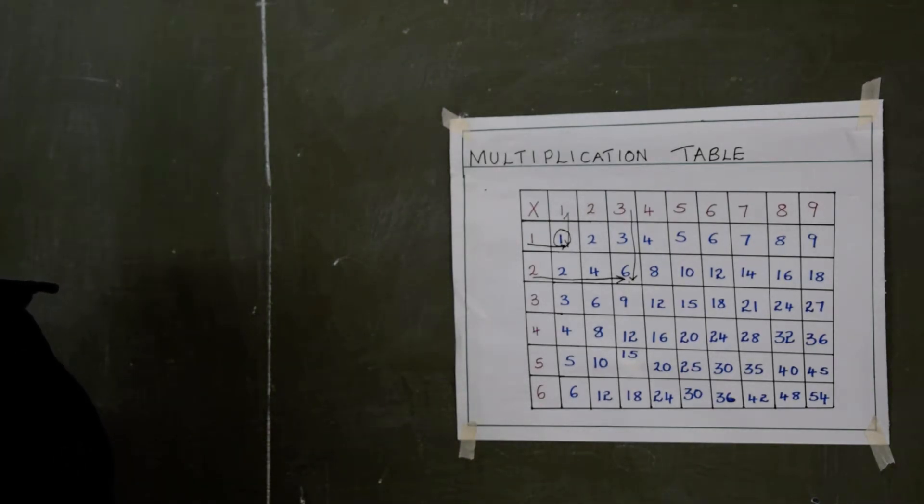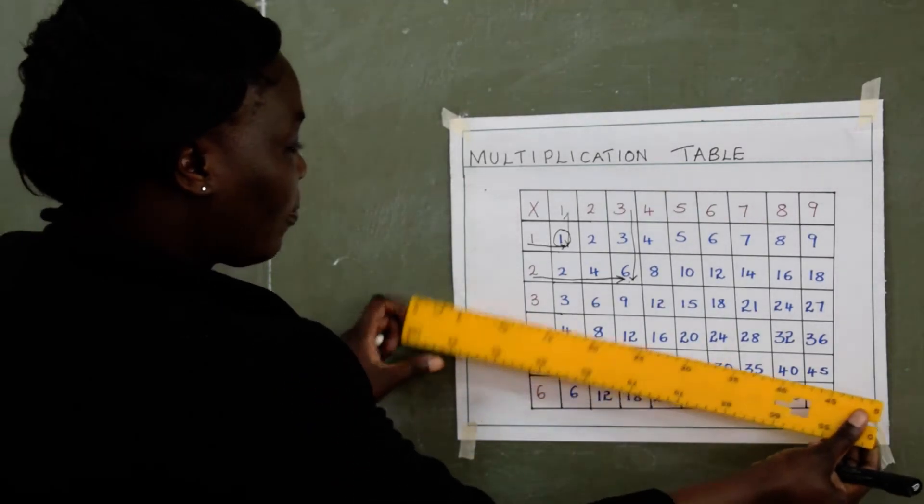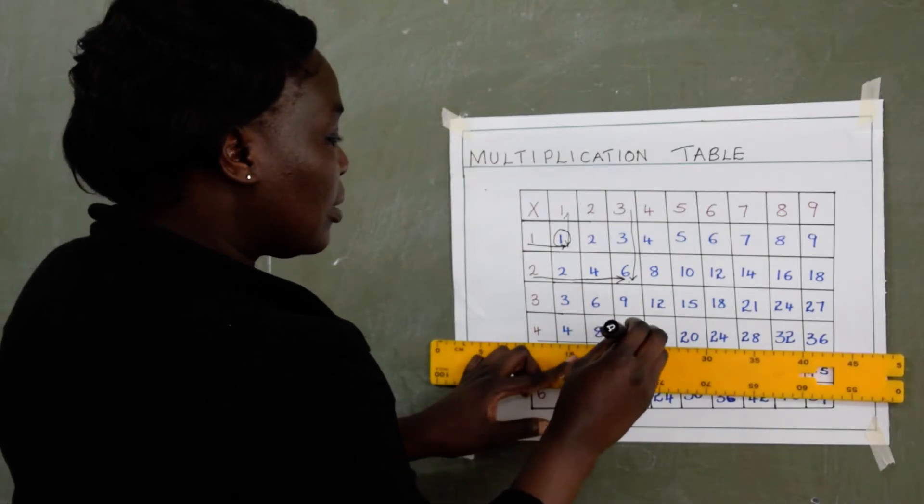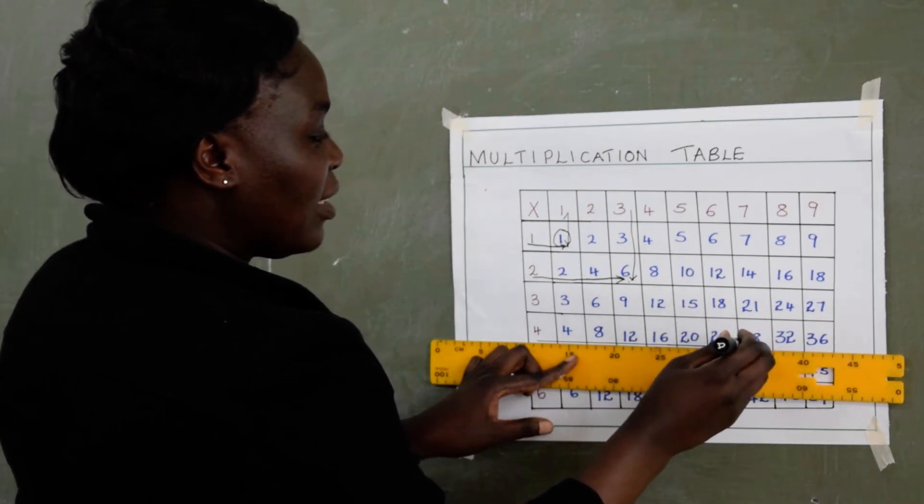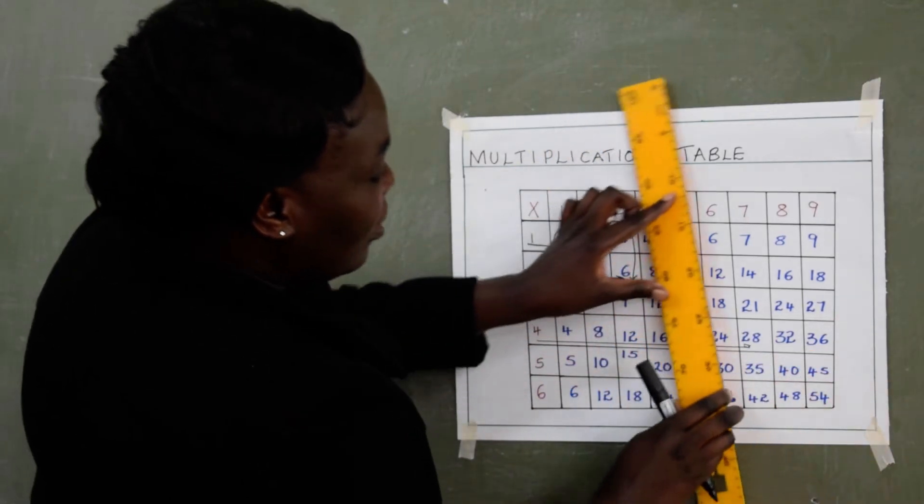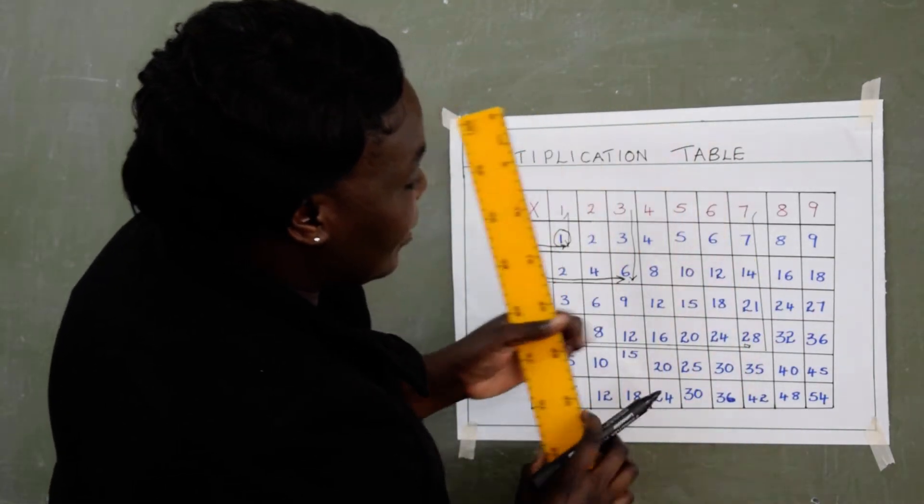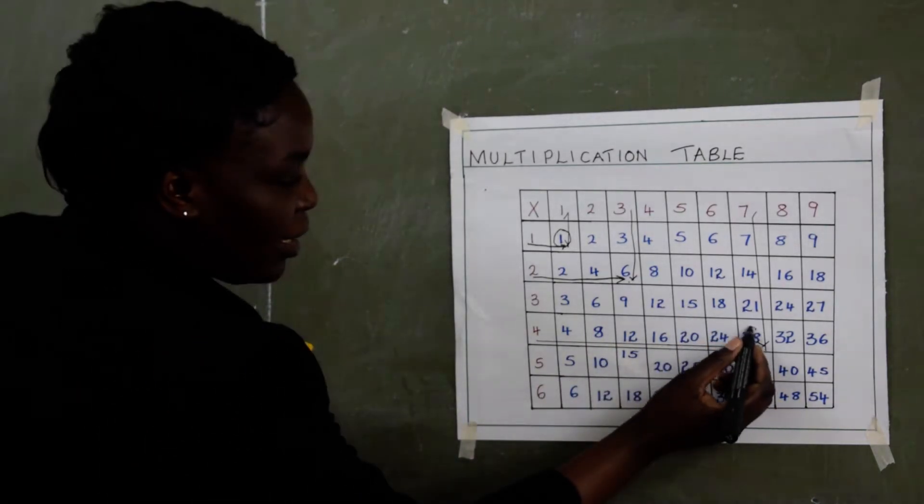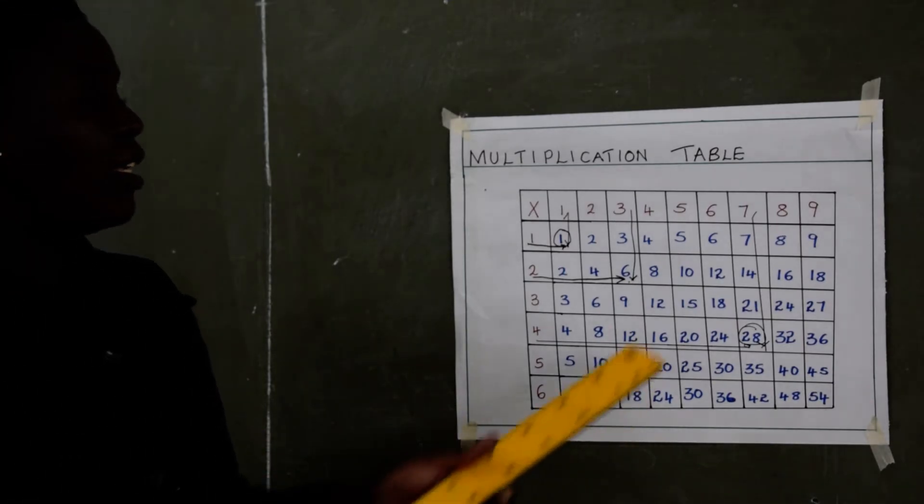We can try another one. 4 times 7. So I will start from 4. Maybe it is up there so that I don't draw zigzags. And you look where 7 is. My 7 is here. Then I will go up like that.